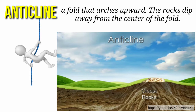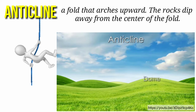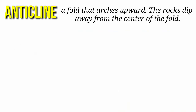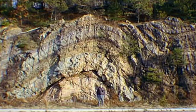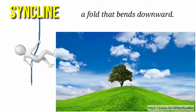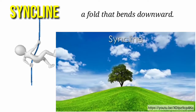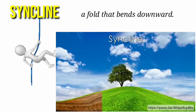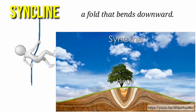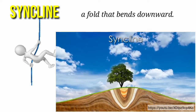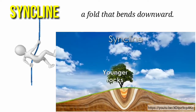Sometimes these older rocks become exposed. If the fold is fairly round, it is called a dome. The syncline is a fold that bends downward. This fold's center is called the trough. Unlike the monocline and anticline, newer rocks are at the center and older rocks are on the outside.